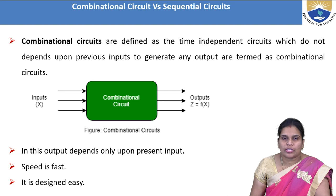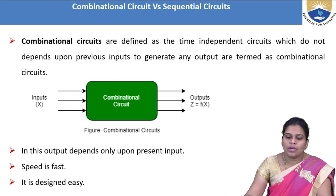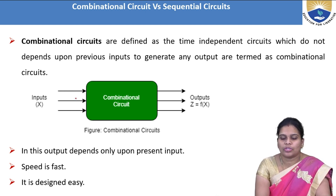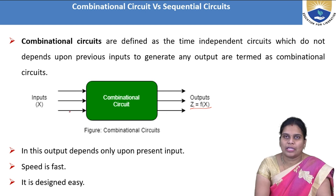So what is the combinational circuit? The combinational circuit depends upon the present inputs only. It does not depend upon the previous inputs. If you take any output, that output depends on the present inputs only. So that is the combinational circuit — it does not depend on previous inputs. The inputs are x, and the output z equals f(x), which is a function of x.